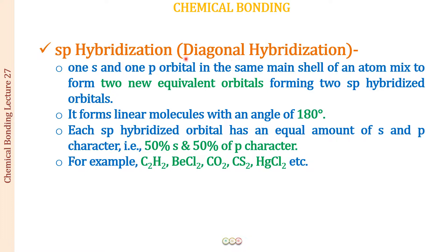Because there is one S and one P orbital mixing, we have an equal ratio of both S orbital character and P orbital character in the hybrid orbitals. So we will have 50% S character and 50% P character in both the SP hybrid orbitals. The common examples where we will see SP hybridization are C2H2 (ethyne), BeCl2, carbon dioxide, CS2, HgCl2, etc.